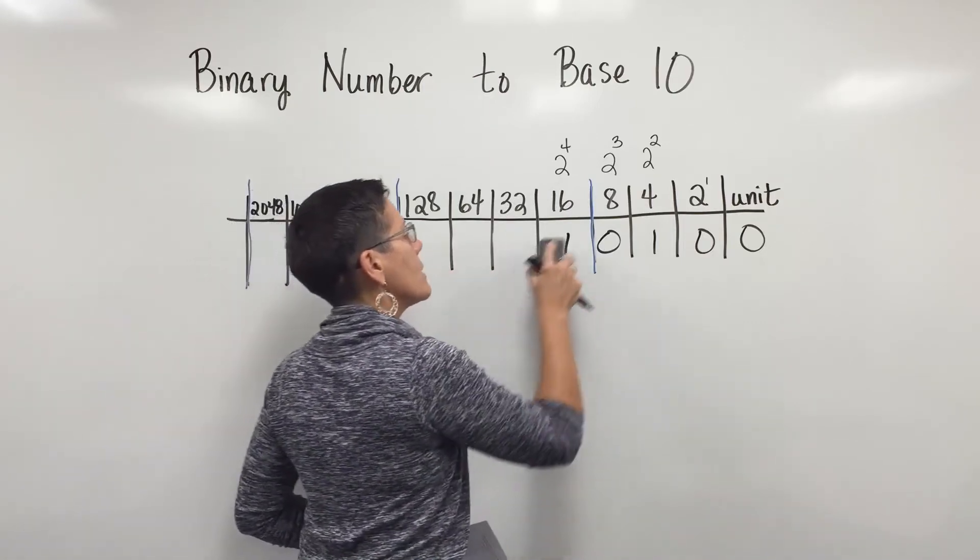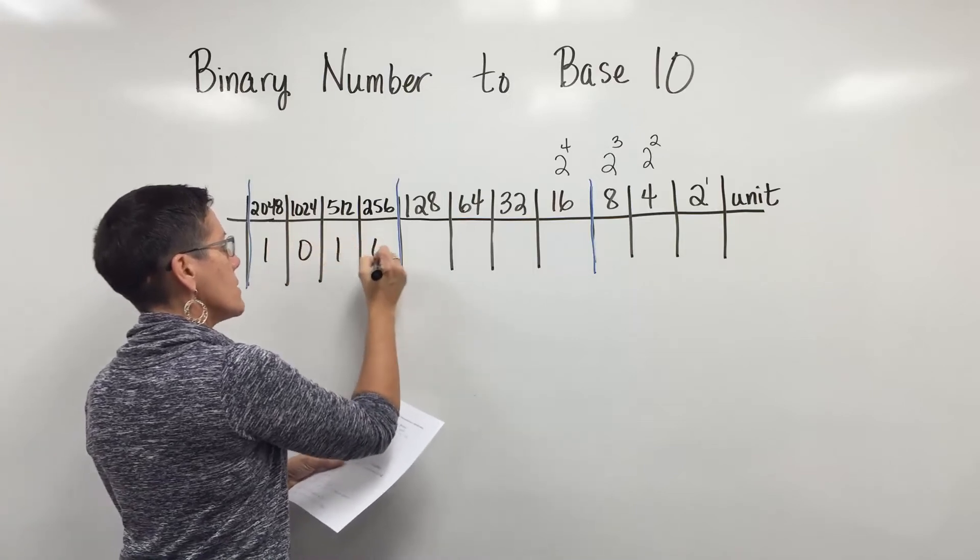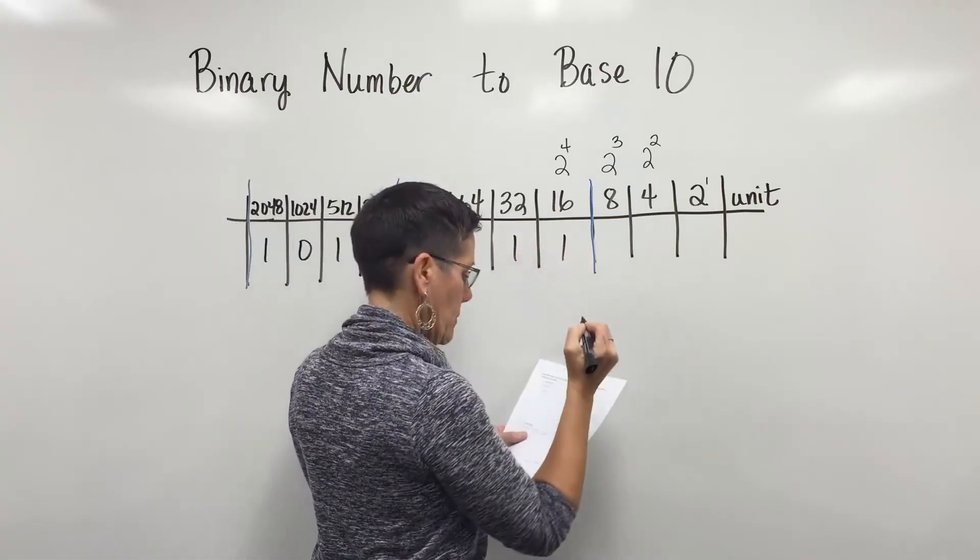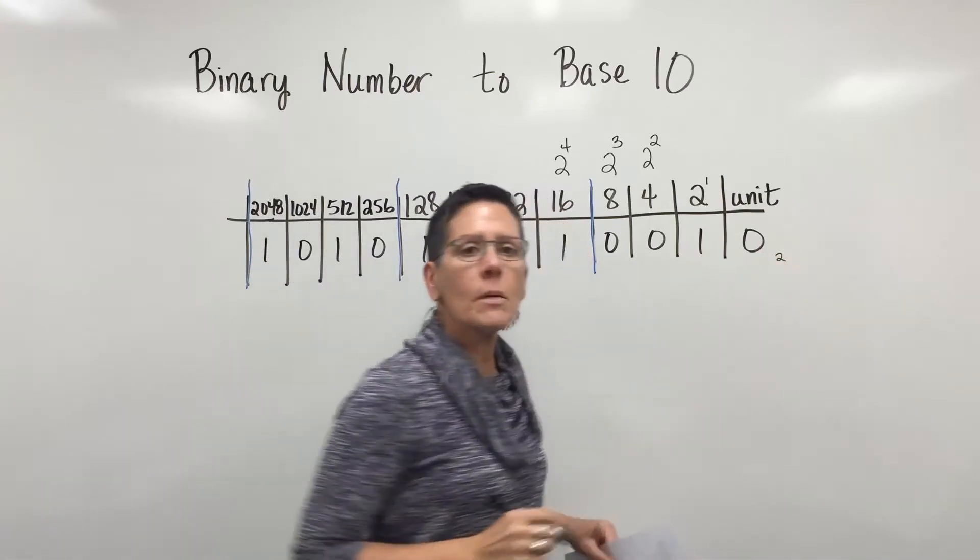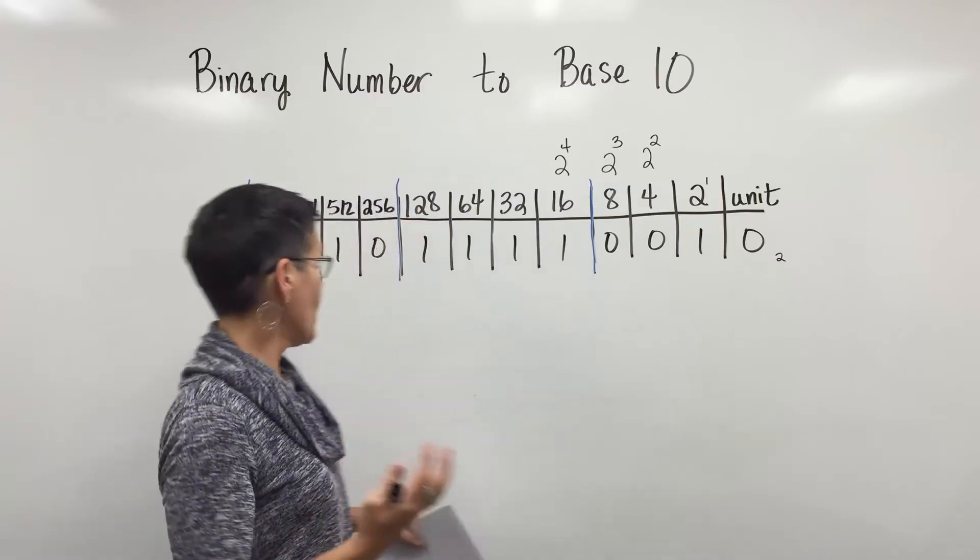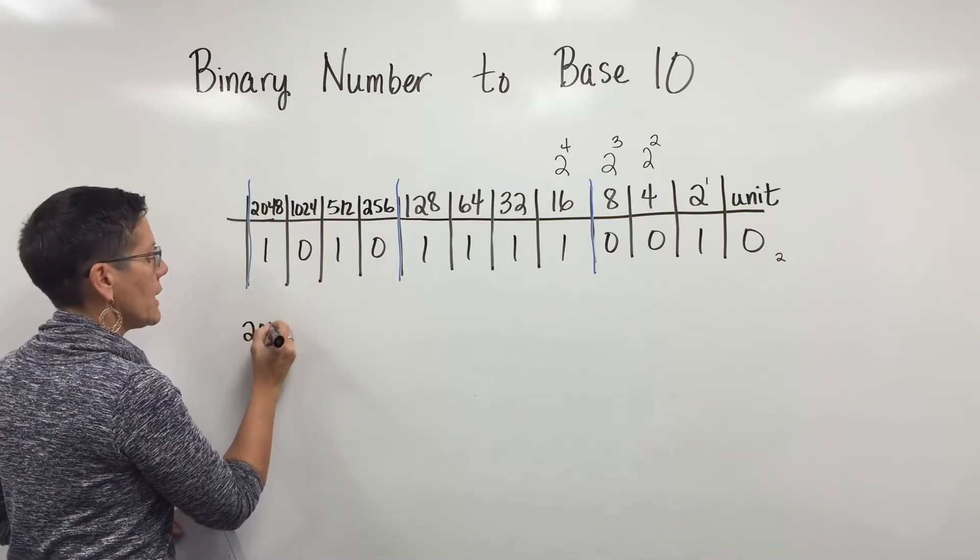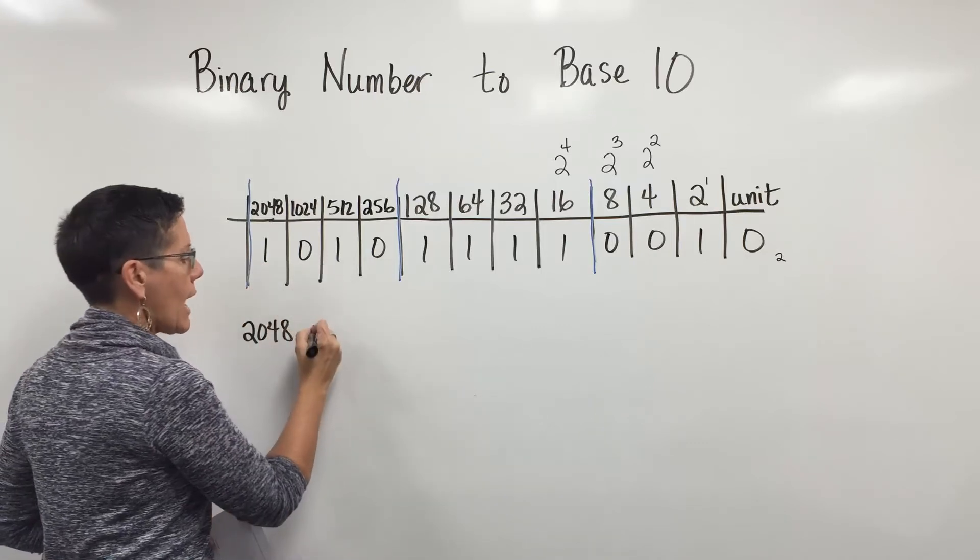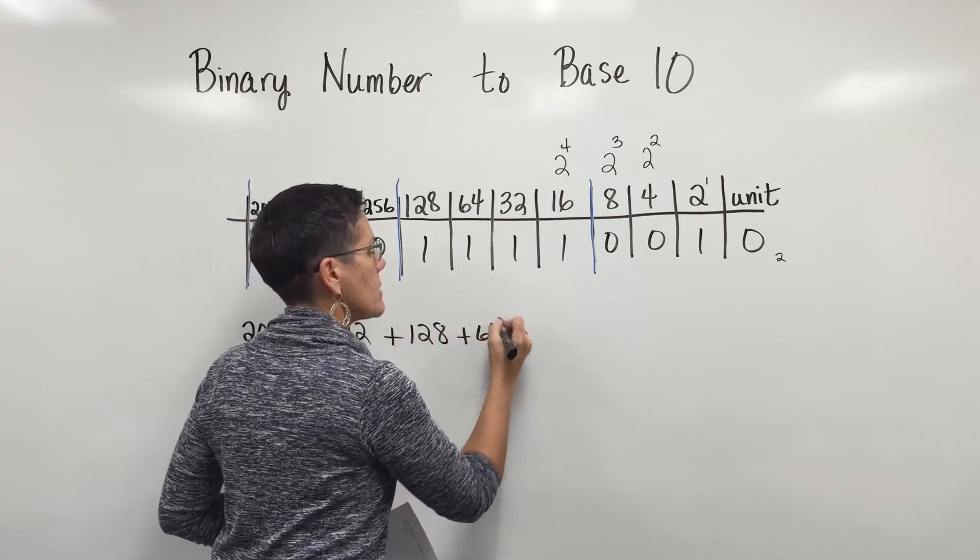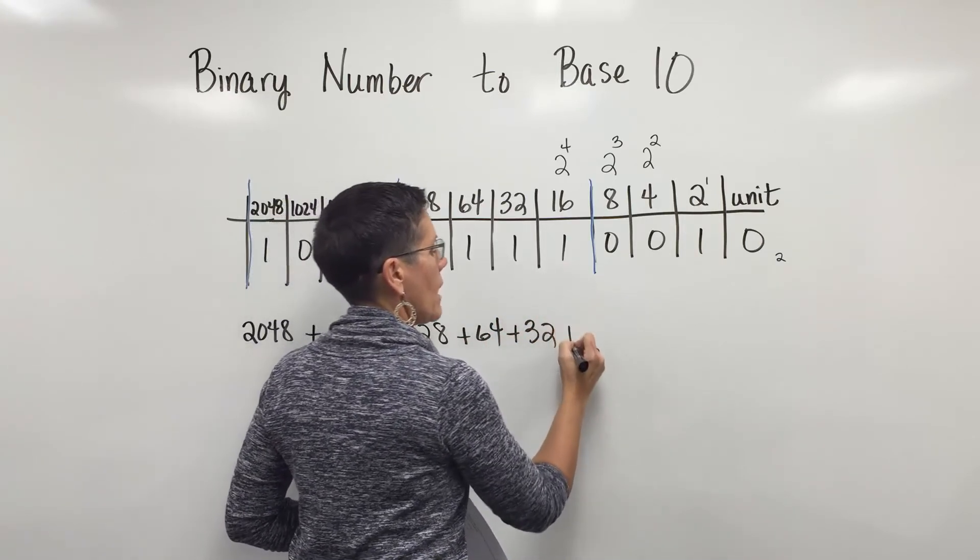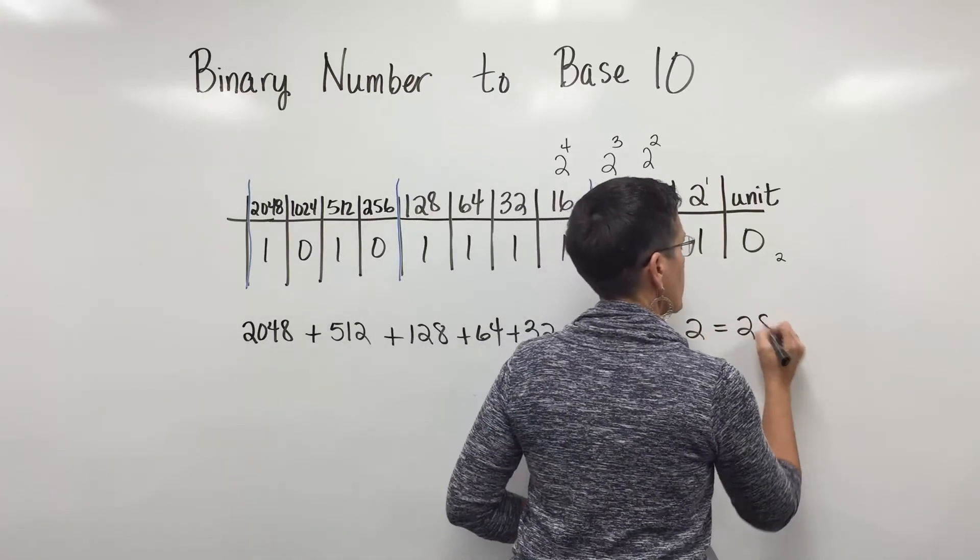The last number I want to do is 101011110010. Remember that's how we say it in binary notation. If that was written, I'd have a subscript of 2 to tell the reader that's a base 2 number. I have a 2048, just one of them. I don't have any 1024s. I have one 512, I have a 128, I have a 64, I have a 32, I have a 16, and finally I have 2. When you add all those up, I found that to be 2802.